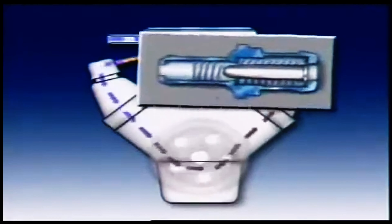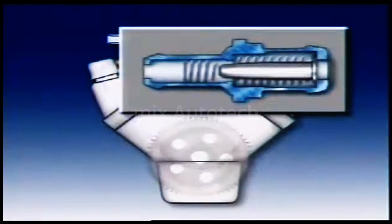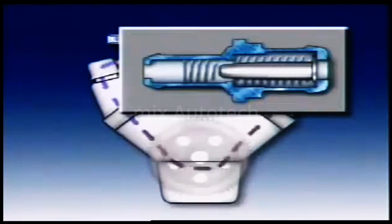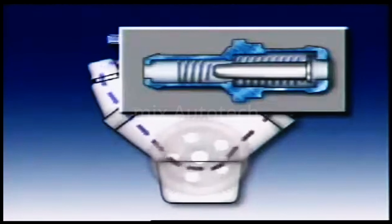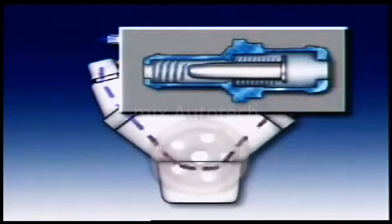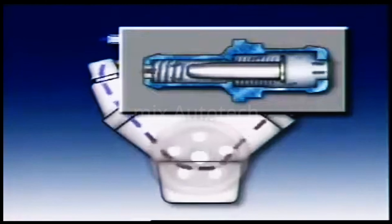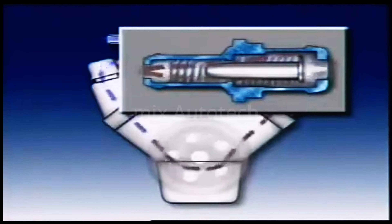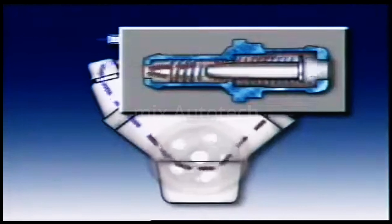The PCV valve is controlled by the pressure in the manifold. With the engine off, the valve is closed and air cannot enter the inlet manifold, which allows the engine to start. At idle, low pressure in the manifold draws the valve to the other end of the body, letting a small measured amount of vapor pass the valve. At wider throttle openings, the valve plunger position allows maximum flow through the body, giving maximum crankcase ventilation.